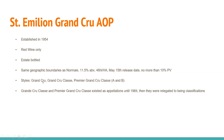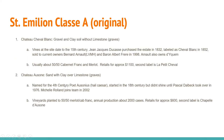Saint-Emilion Grand Cru is broken down into Grand Cru, Grand Cru Classé, and Premier Grand Cru Classé A and B. The Grand Cru Classé and Premier Grand Cru Classé existed as separate appellations until 1984 but were then relegated to classifications within Saint-Emilion Grand Cru. The Grand Cru designation requires a slightly higher alcohol content, a lower yield, and a one-month later release date compared to standard Saint-Emilion.